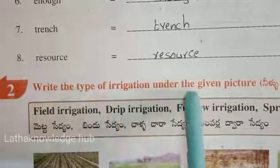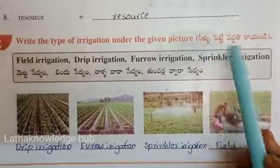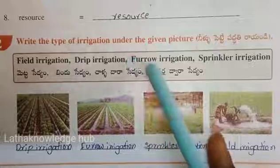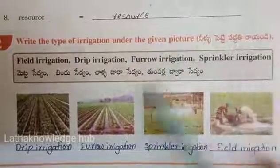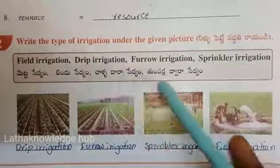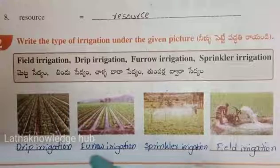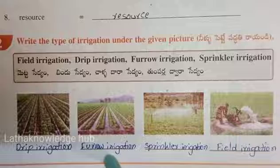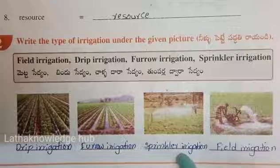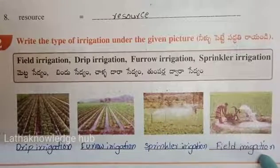Write the type of irrigation under the given picture. The types shown are: drip irrigation and field irrigation. Field irrigation means water is supplied through channels to the field.